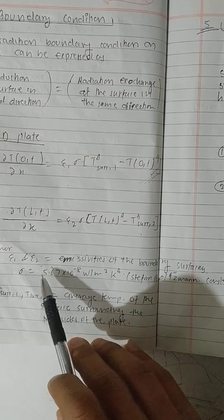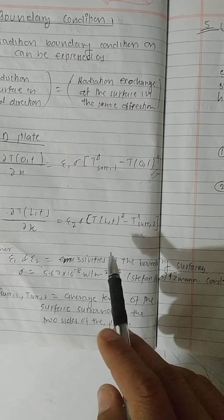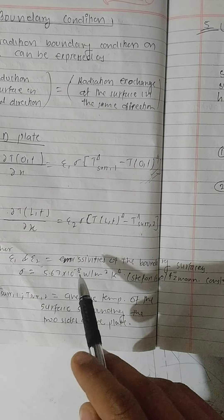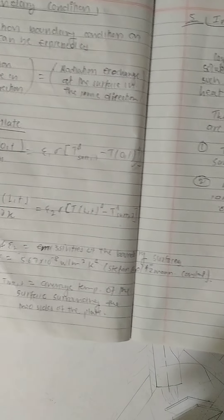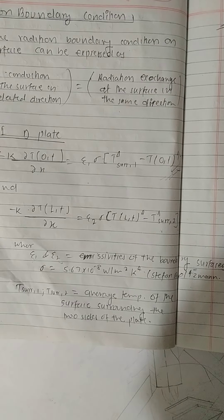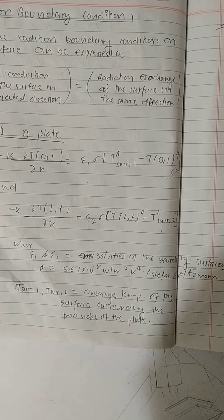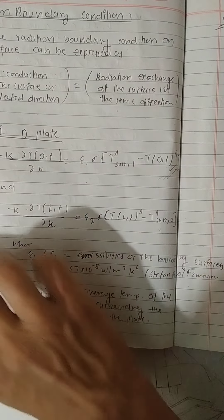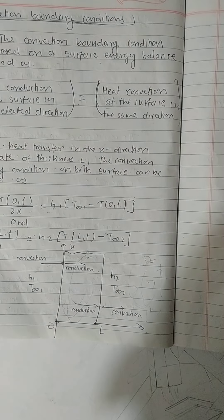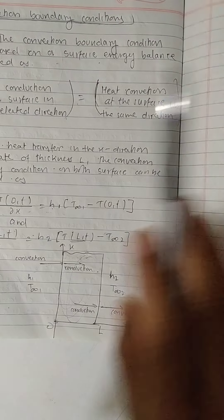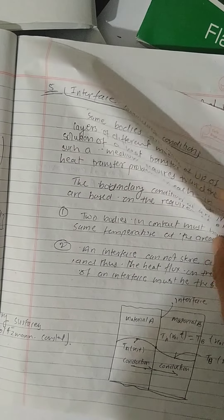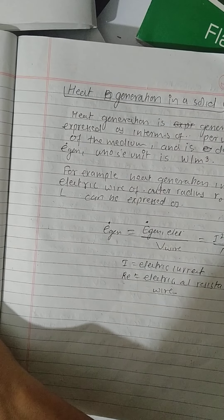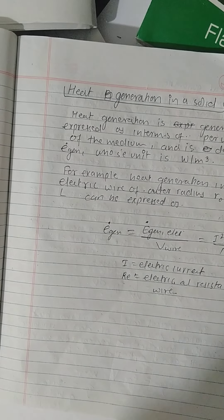The Stefan-Boltzmann constant σ = 5.67 × 10⁻⁸ W/m²·K⁴. T_surr,1 and T_surr,2 are the average temperatures of the surroundings on the two sides of the plate, analogous to T∞₁ and T∞₂ in the convection case. The interface boundary condition will be discussed in the next lecture.